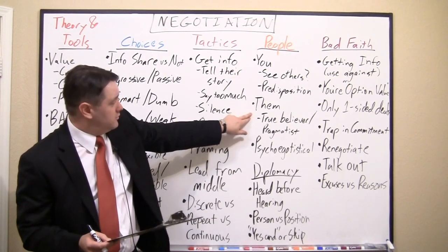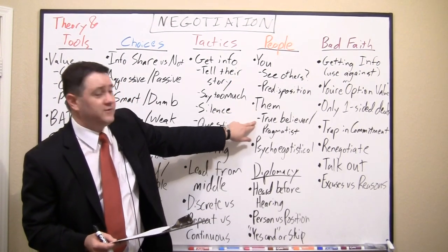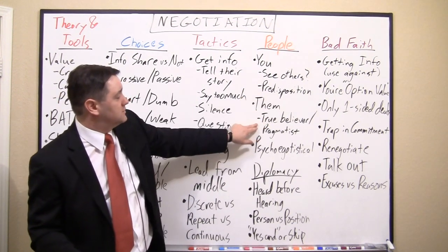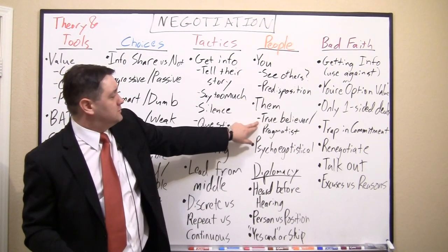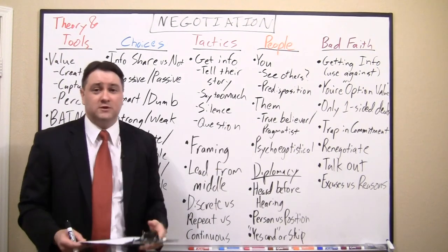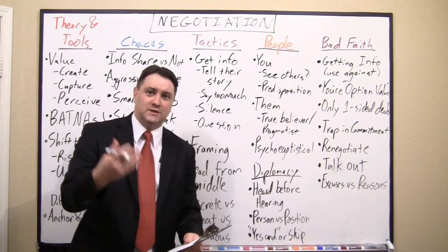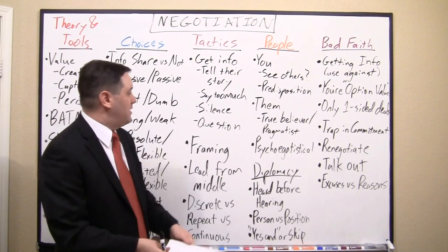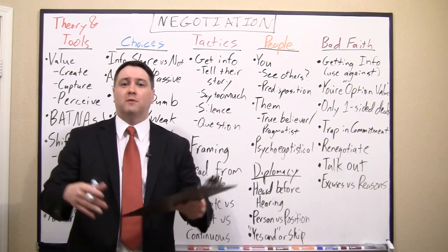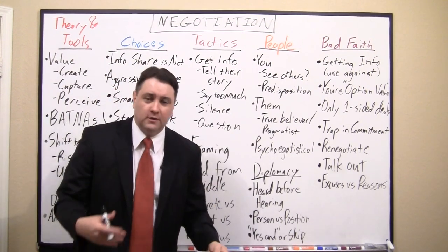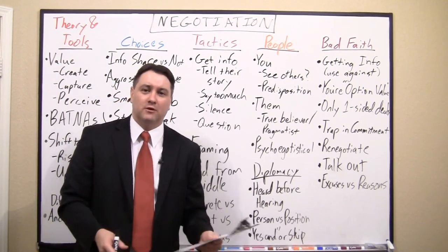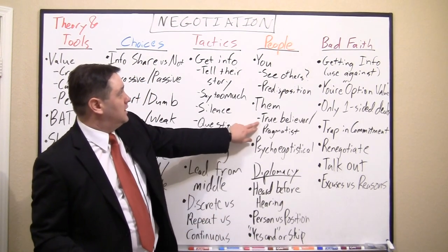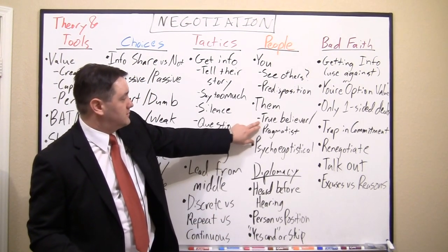Now let's talk about the other party. It's good to know where they're coming from. Are they a true believer — adamant about doing something on principle with no real flexibility — or are they a pragmatist who just wants to find some reasonable middle ground? Your tactics should change based on which type you're dealing with.